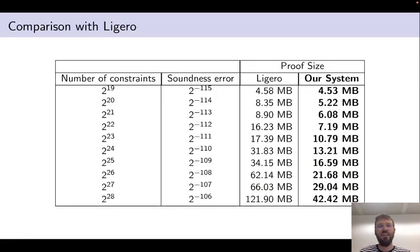This can also be seen in this table. Starting from about 2 to the 20 constraints in R1CS, our proof system achieves proof sizes that are about equal to the proof sizes offered by Legaro. But if one increases the number of constraints, for example to 2 to the 28 constraints, then we achieve this factor of 3 improvement over Legaro in proof size. All of these numbers are for equal soundless error.